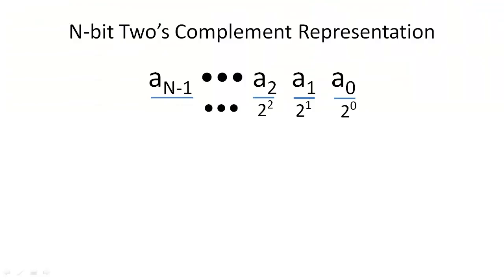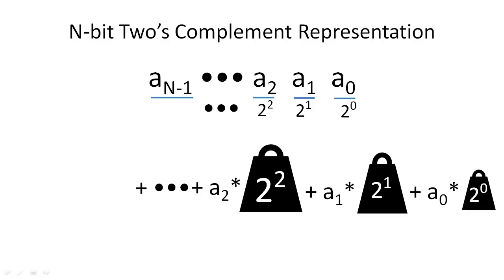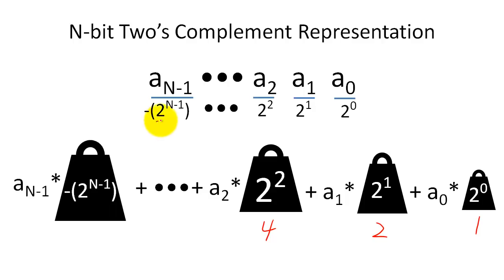If we want to interpret a 2's complement represented number, we can determine its value using techniques that we learned when we discussed positional notations. Given a specific number of bits, the rightmost bit has a weight of 1, the second rightmost bit has a weight of 2, and so forth, just like unsigned binary representation. The most significant bit has the magnitude that we might expect, but it has a negative weight.